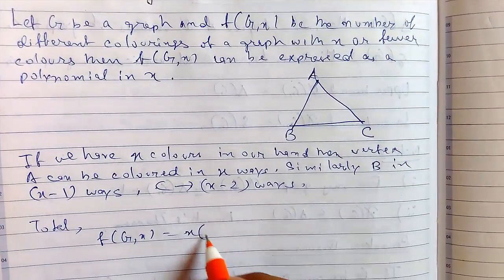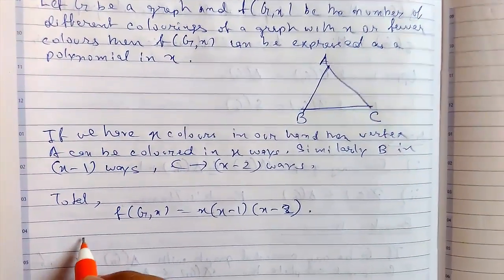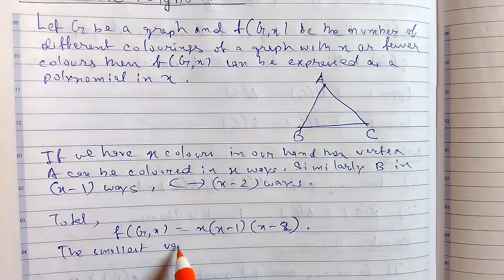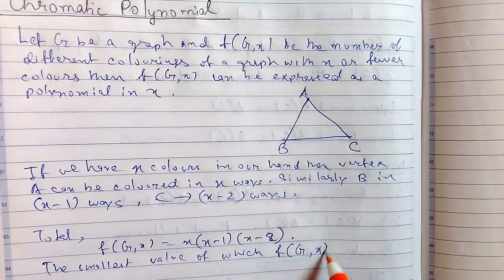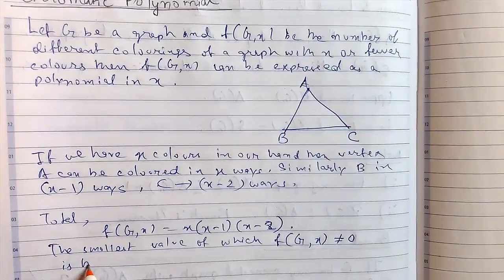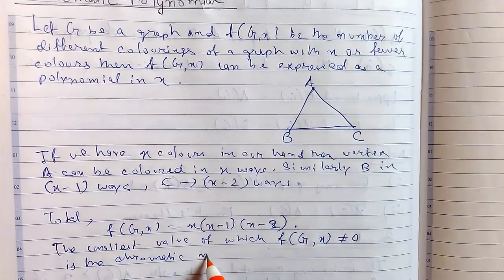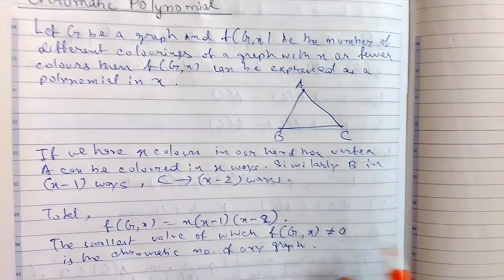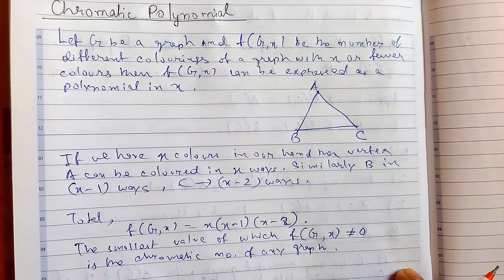So in total, f(G, x) will be the product of these three. The smallest value for which f(G, x) is not equal to zero is the chromatic number of that graph. So from this chromatic polynomial we can obtain the chromatic number of the graph. Thanks for watching.